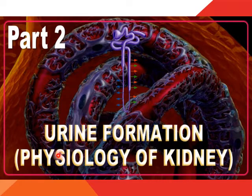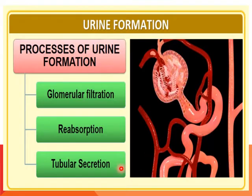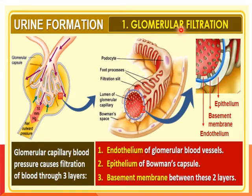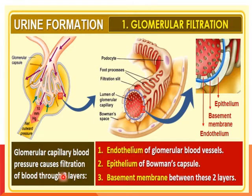Urine formation, which is the physiology of the kidney, consists of three processes: glomerular filtration, reabsorption, and tubular secretion. Glomerular filtration, also known as ultra-filtration, occurs when glomerular capillary blood pressure causes filtration of blood through three layers: the endothelium of the glomerular blood vessel, the epithelium of Bowman's capsule, and the basement membrane in between.